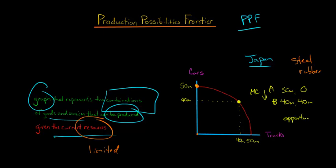You can think about that in terms of marginal cost or opportunity cost. The opportunity cost of going from point A to point B is that we're giving up 10 million cars but we're getting 40 million trucks. All these points along this curve are efficient in production. At any of those points along the curve, Japan could not produce an additional unit of either a car or a truck without giving up one of the other.